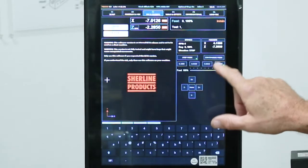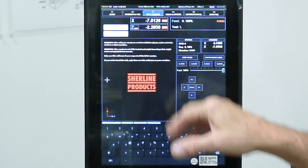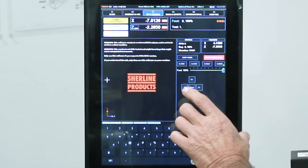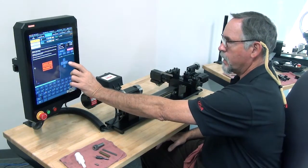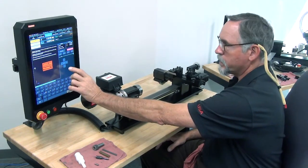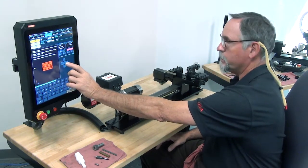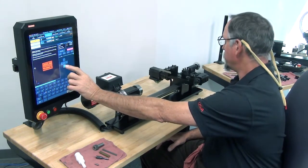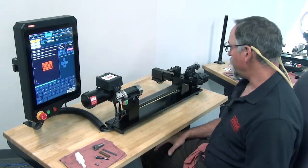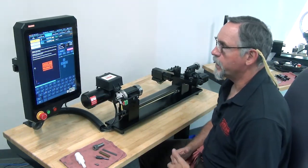So on the F3 jog page, you can do this before you home your machine. You're going to go Z-minus, you should move towards the headstock, Z-plus towards the tailstock, X-plus away from you, X-minus towards you. So right now all the axes are moving in the correct direction.